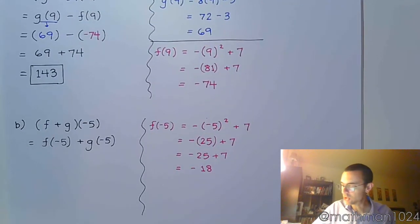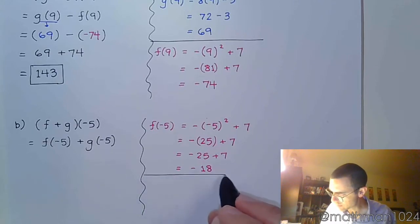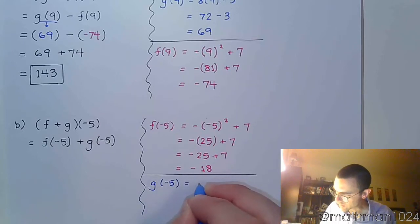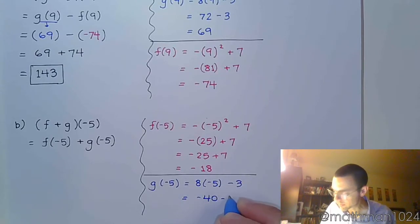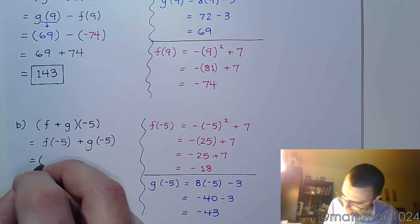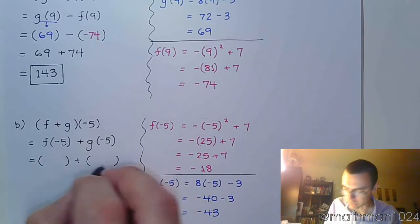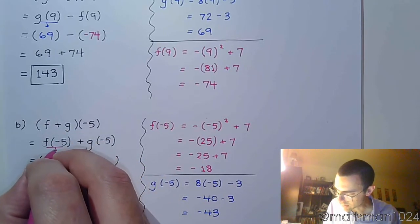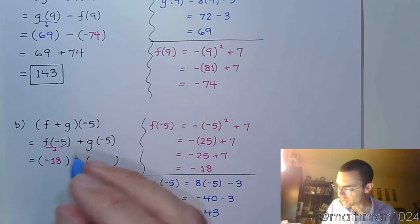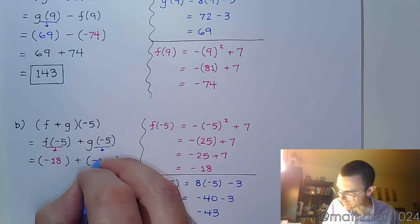And now let's find g of negative 5. g of negative 5, so that's 8 times negative 5 minus 3. We have negative 40 minus 3, which equals negative 43. And we come back here, back to the main part of the problem.